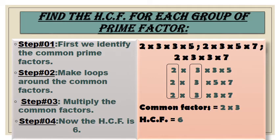First, identify the common prime factors from each group, then make loops around the common factors. The common factors here are 2 × 3. So 2 × 3 = 6, and the HCF is 6.